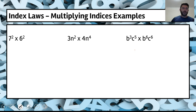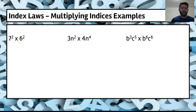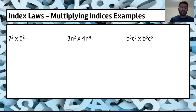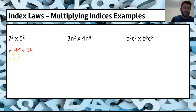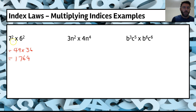Next example: 7 squared times 6 squared. First we check — do we have the same base? No. So are we stuck? Basically yes, this cannot be simplified using index laws. The only way we can answer this is to multiply out: 49 times 36 gives us 1,764. Or we would just keep it in that simplest form.